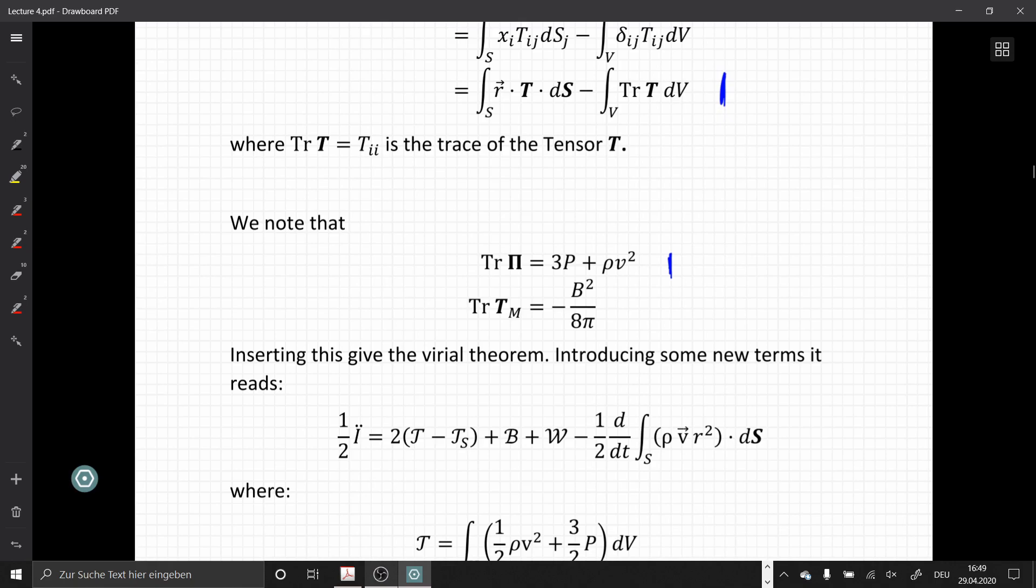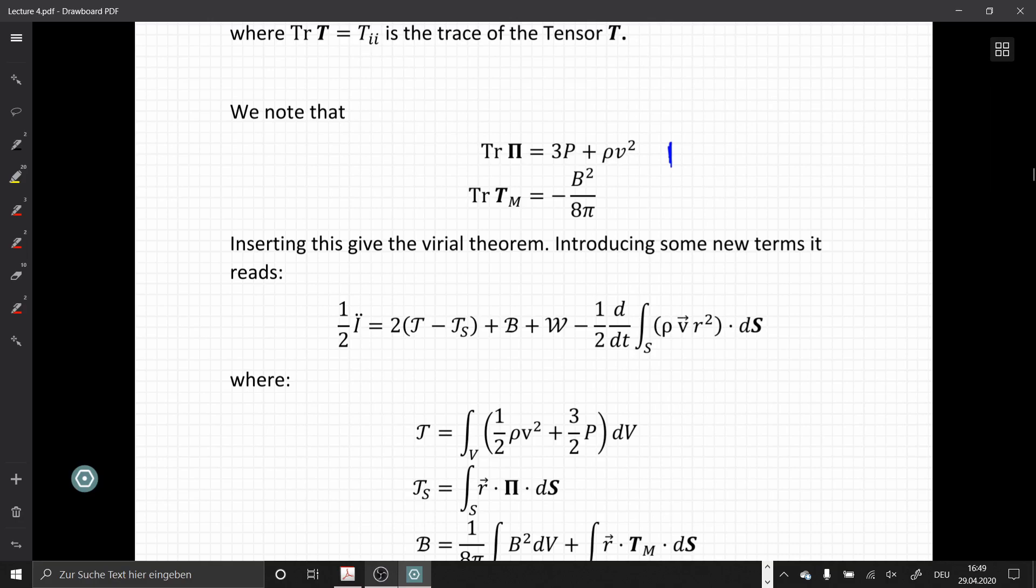So when we insert this into the second derivative, we finally reach the full virial theorem. We just given as one half of the second time derivative of the moment of inertia is two times T minus TS plus B plus W minus the surface integral one half of rho v vector r squared and taking the time derivative of this expression.